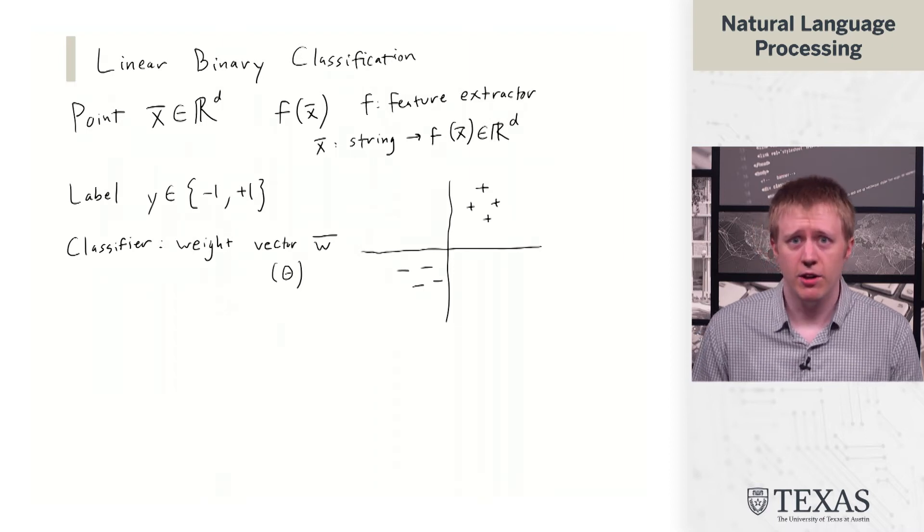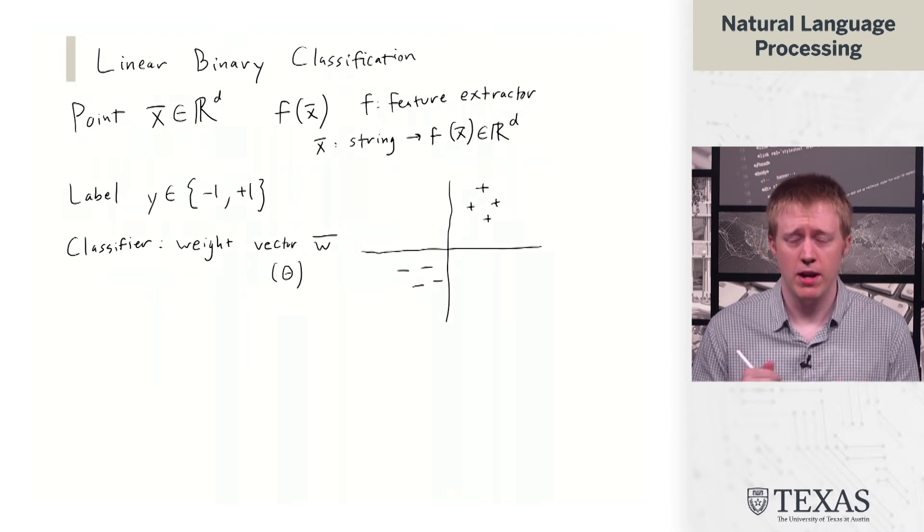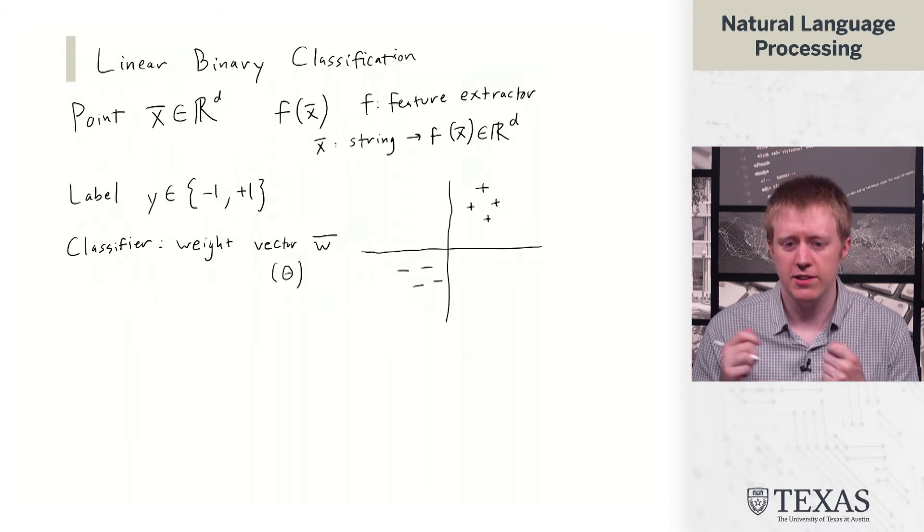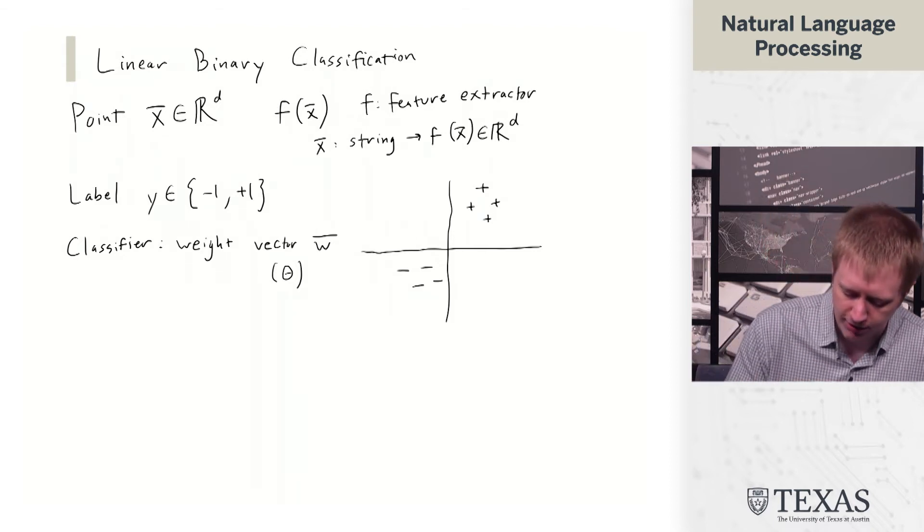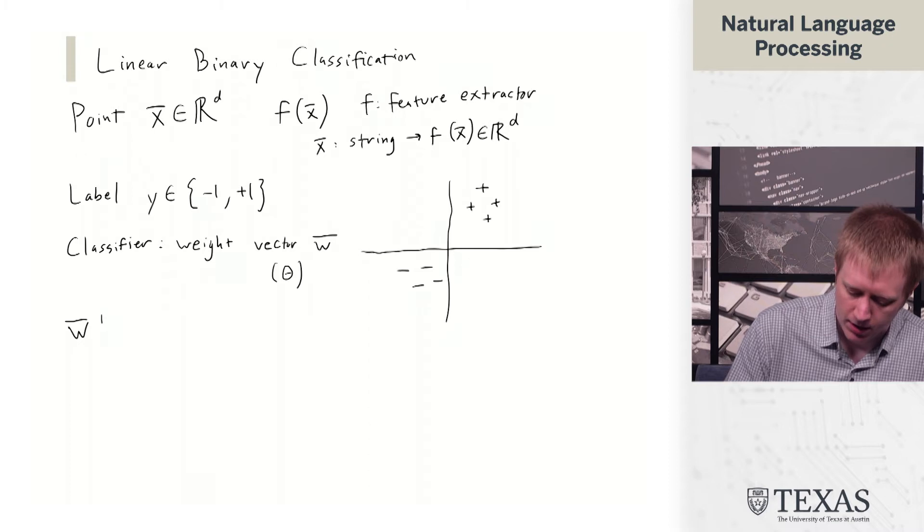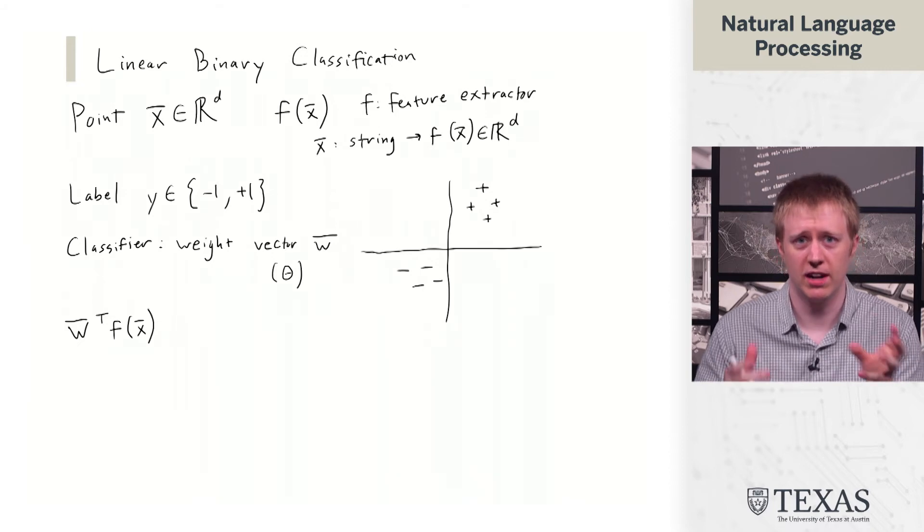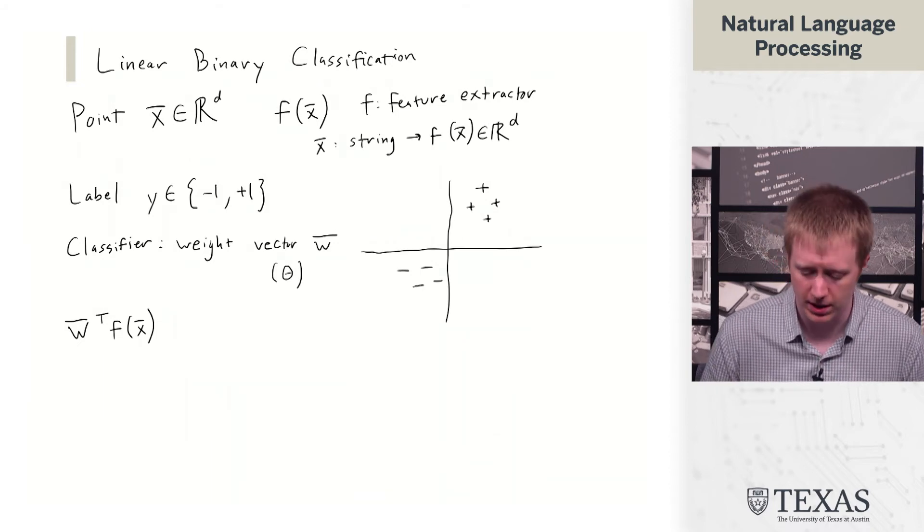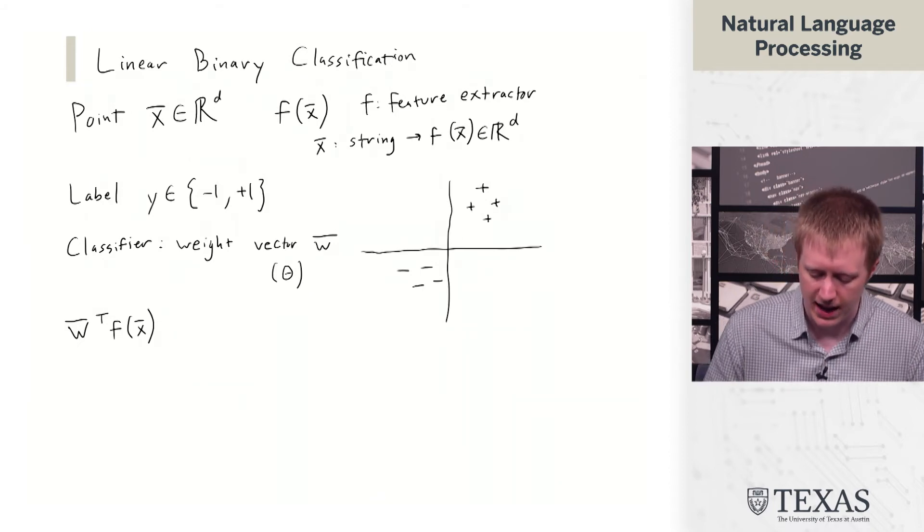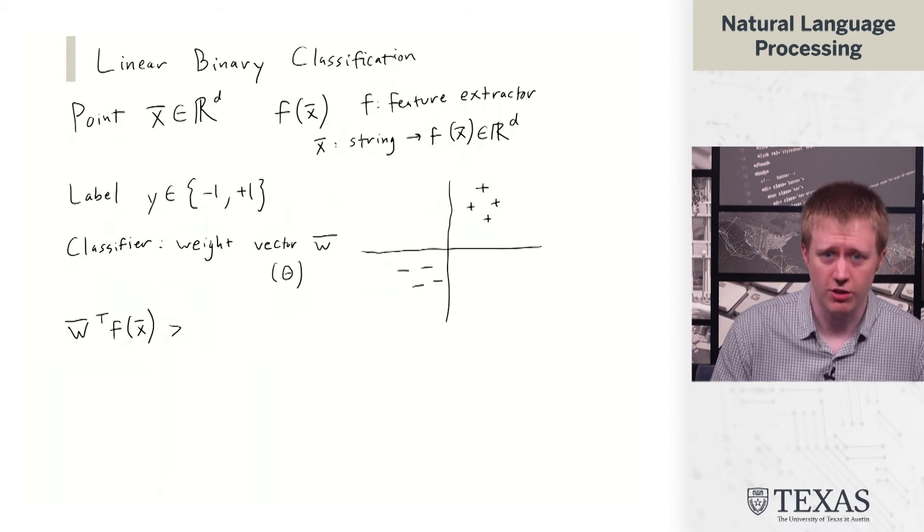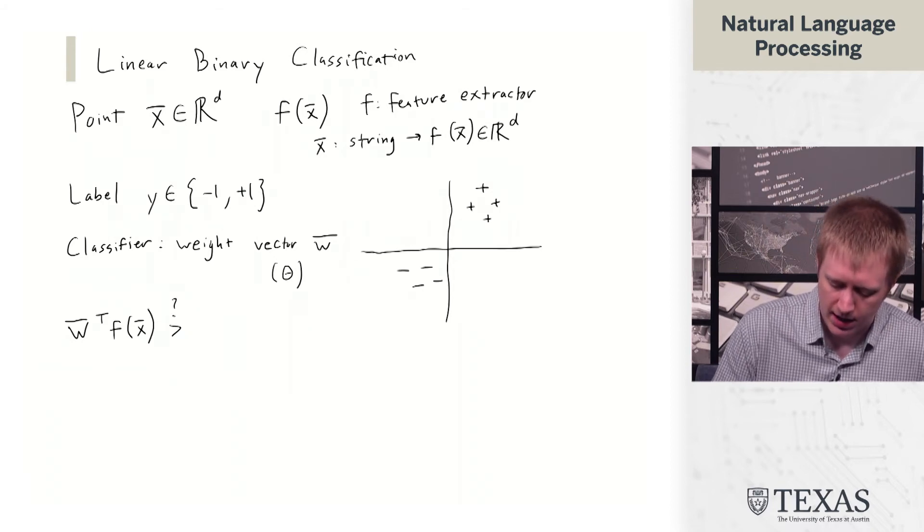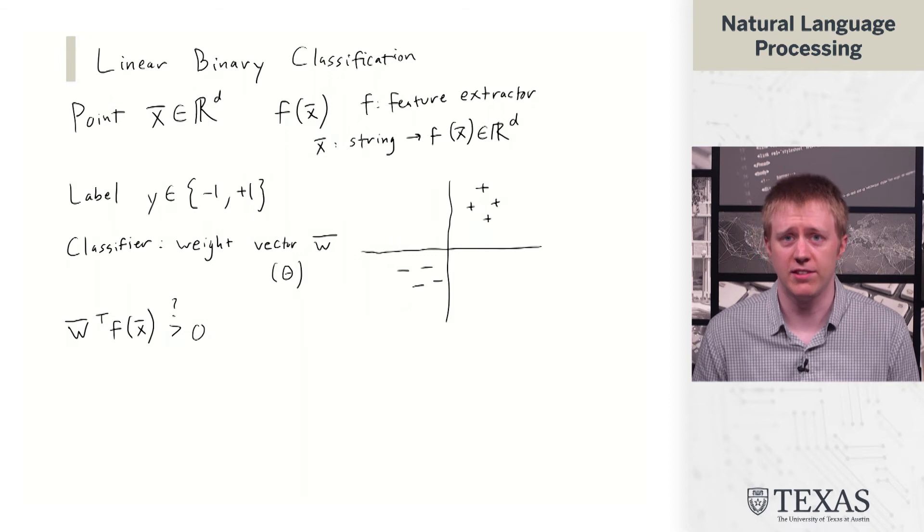The way that this weight vector leads to a classification decision is the following. We compute the dot product or the vector transpose of the weights and the features associated with the point. And then we ask if that's greater than zero.